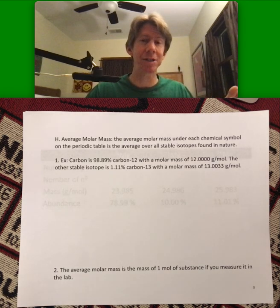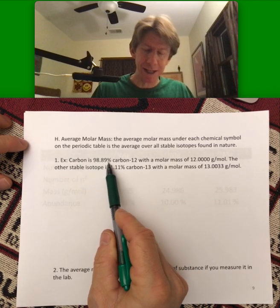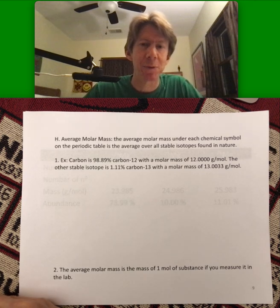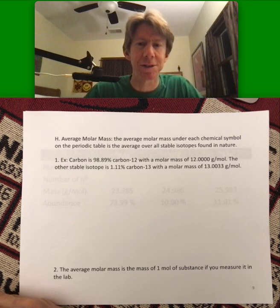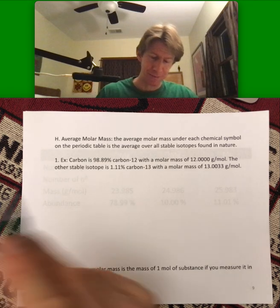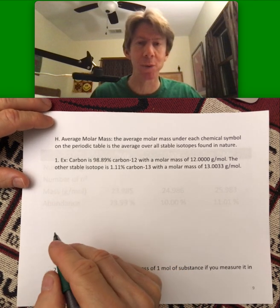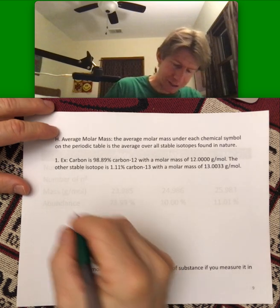This is automatically done for us by the periodic table. As we mentioned before, carbon is 98.89% carbon-12 with a molar mass of 12.0000 grams per mole. The other stable isotope is 1.11% carbon-13 with the molar mass given there. This is a straight average, a weighted average.